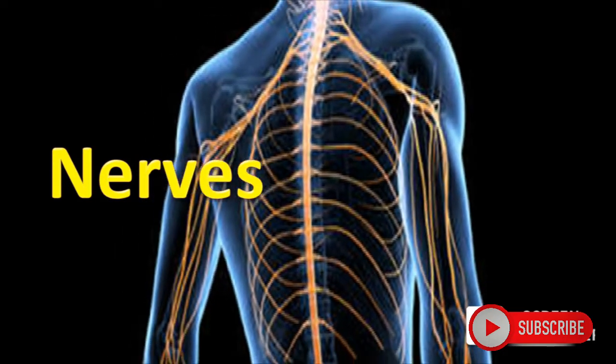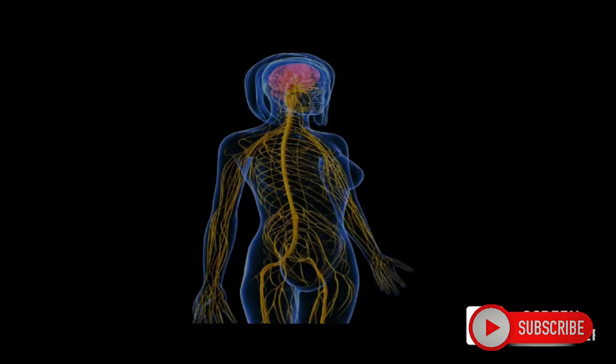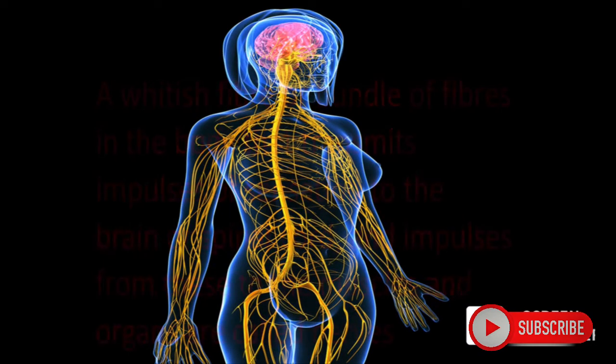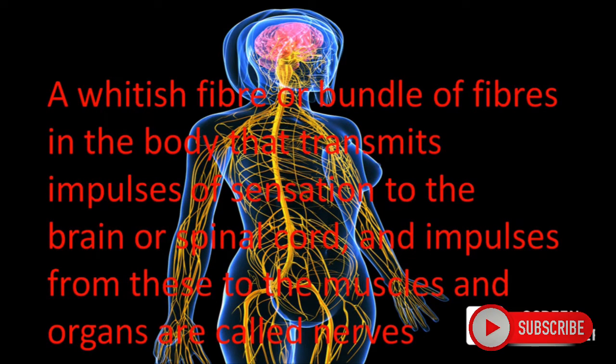Nerves and different functions of nervous tissue. A whitish fiber or bundle of fibers in the body that transmit impulses of sensation to the brain or spinal cord, and impulses from these to the muscles and organs, are called nerves.